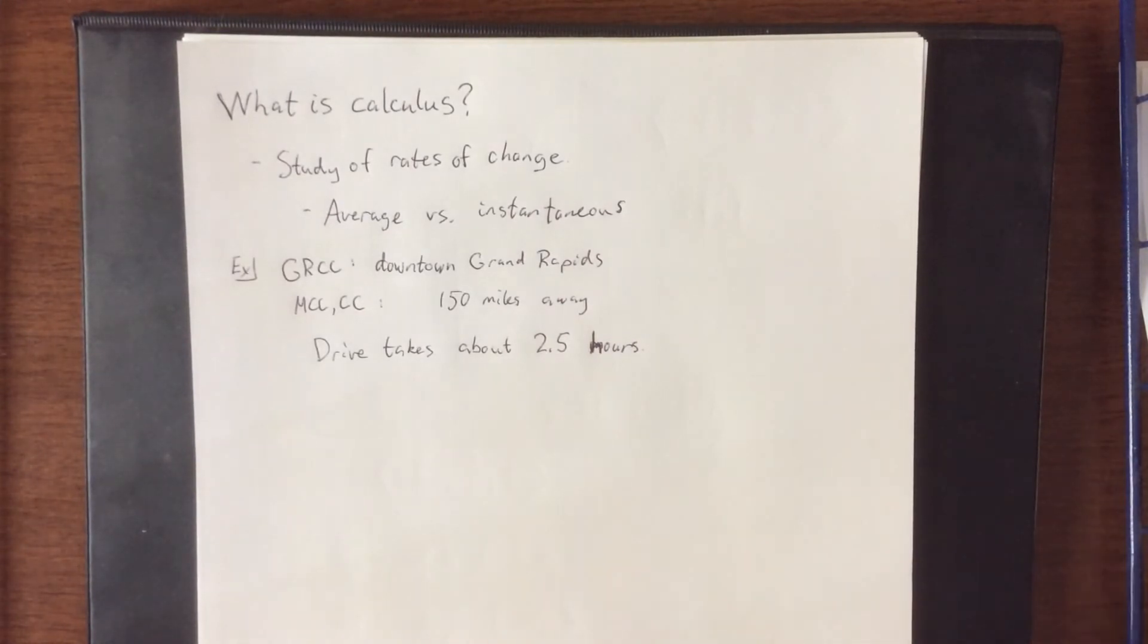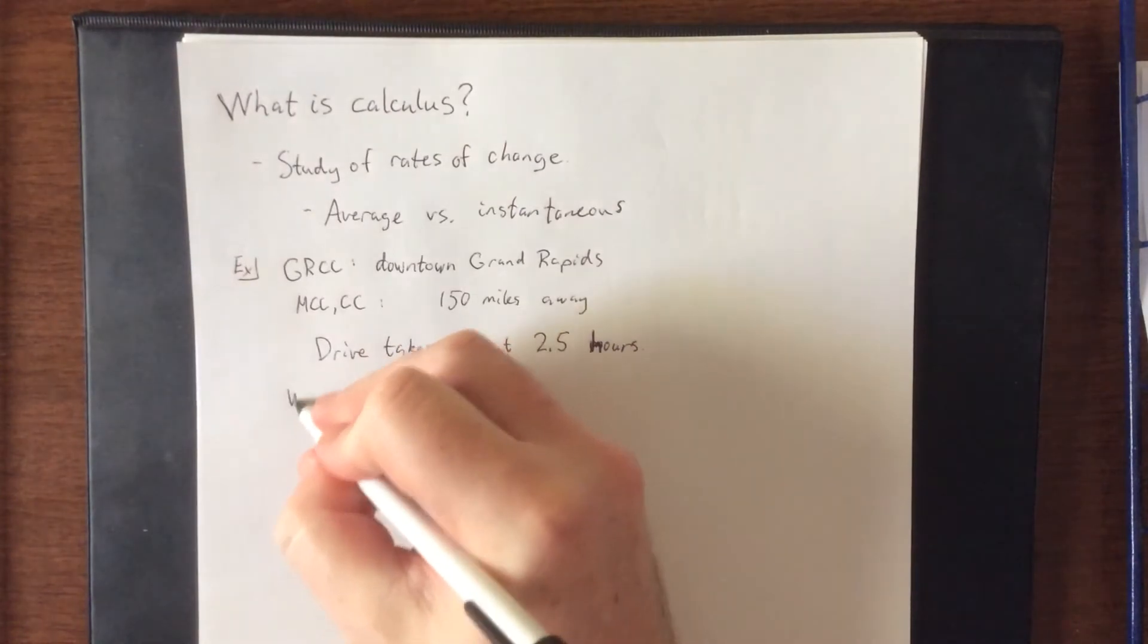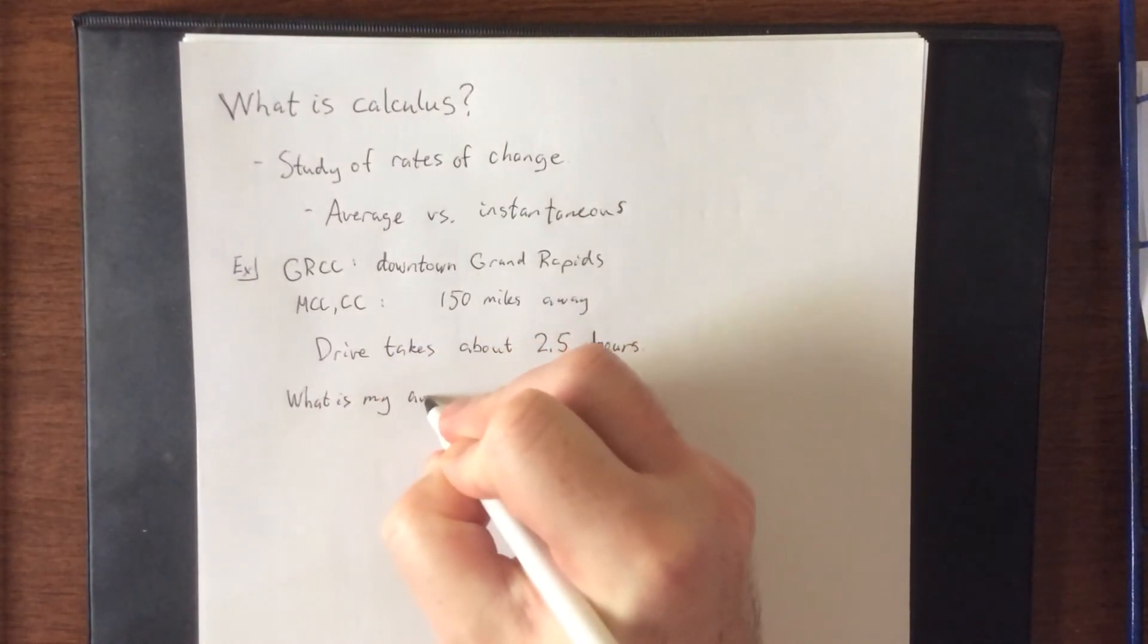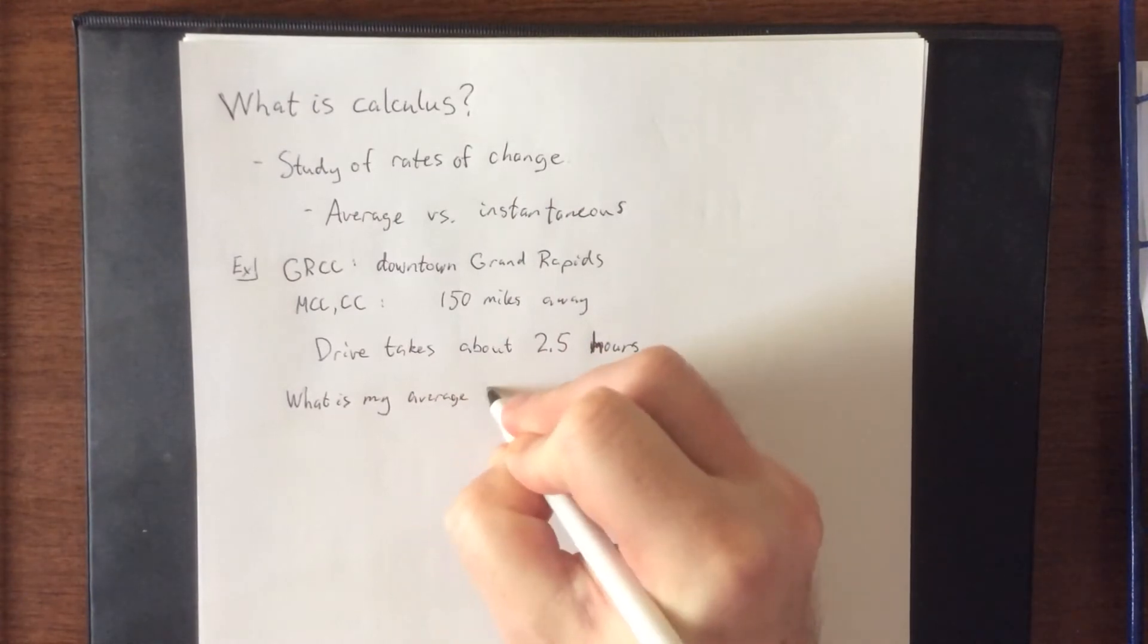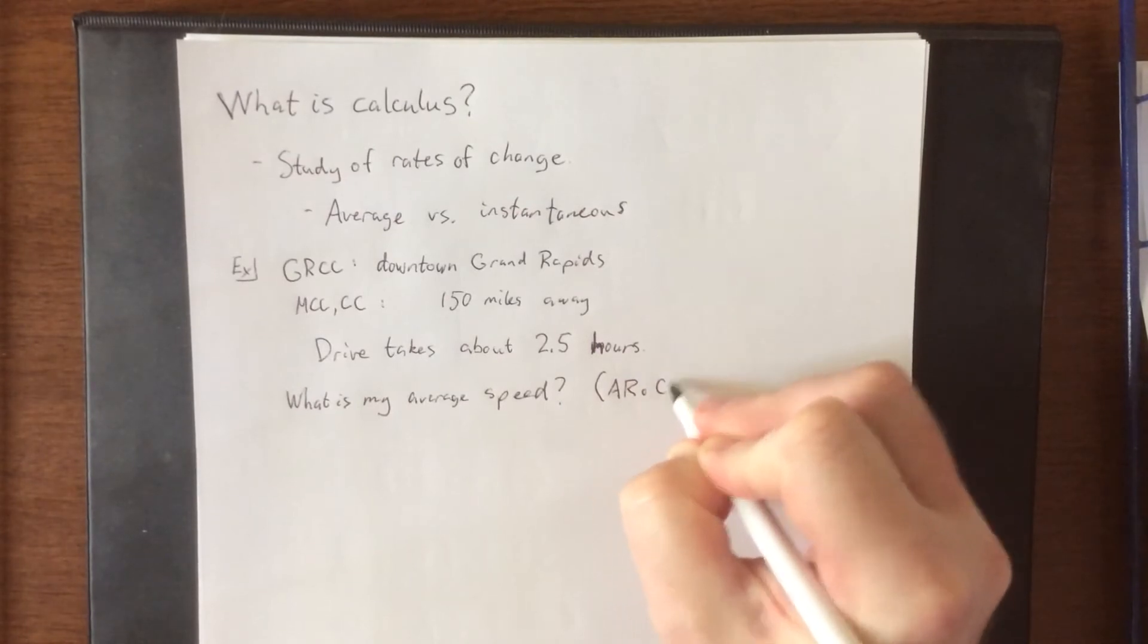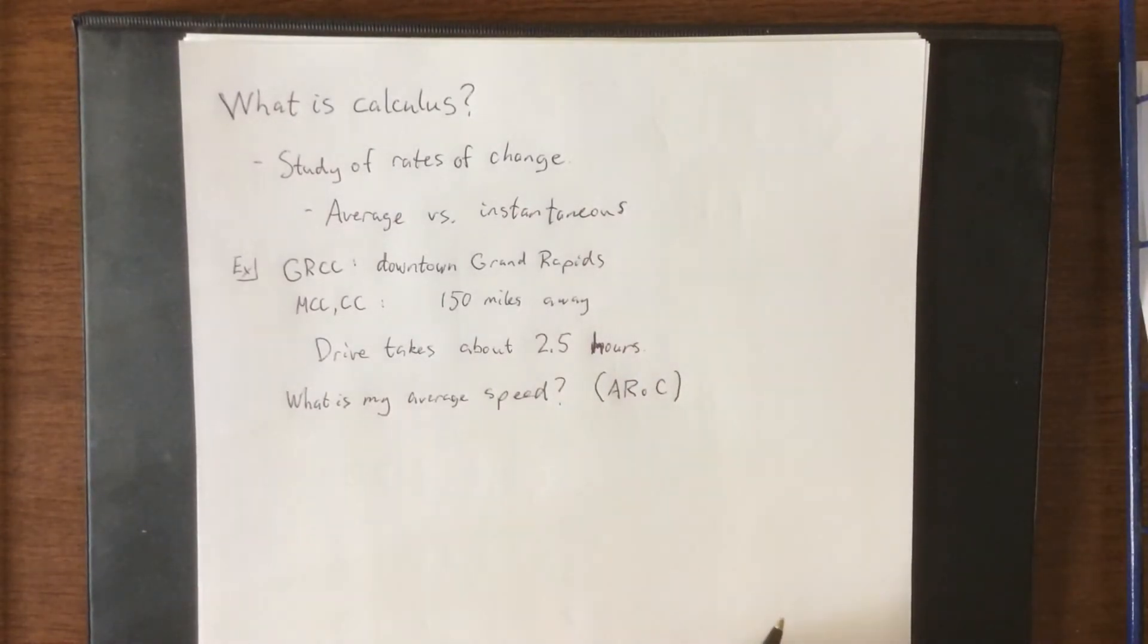So a great algebra question to ask here is, what is my average speed? Now an average speed would also be known as an average rate of change. A speed is a rate of change. Anything with units that involve the word per, like miles per hour, that is a rate of change.